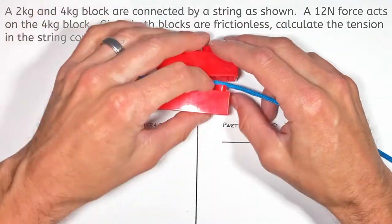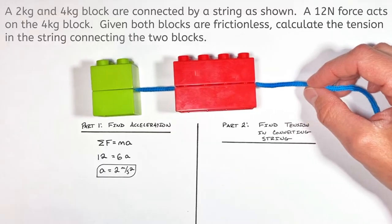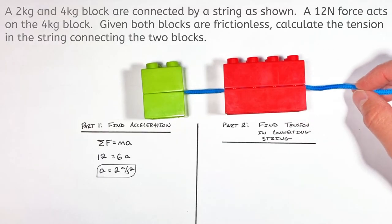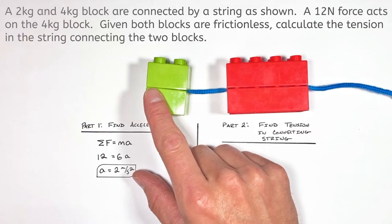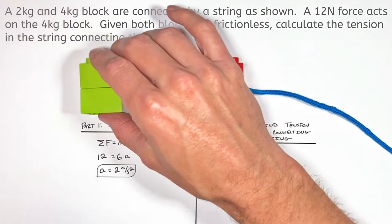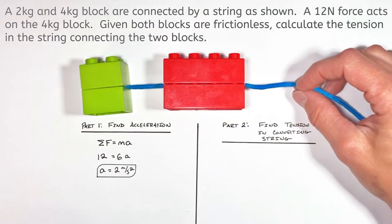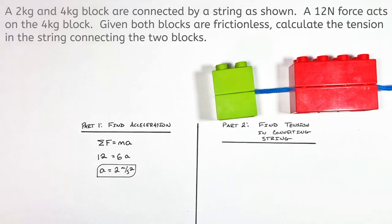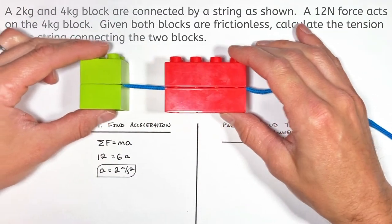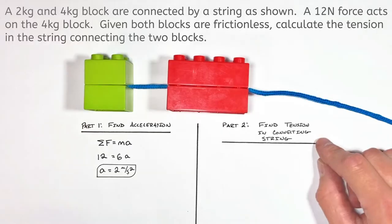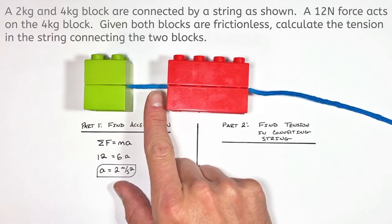Backing up to our original block setup, we still have the same external force of 12 Newtons acting on the same mass of 6 kilograms. That means these two blocks, even though there's a string between them, are going to accelerate at 2 meters per second squared. Now that we know the acceleration of these two blocks, we can move on to part two to solve for the tension in this connecting string.